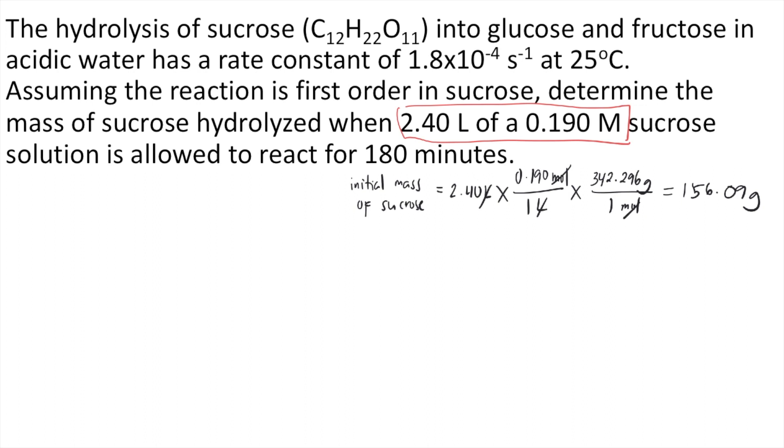So let's set that aside first and go to the main equation to solve this problem. This is an integrated rate law problem. According to the question, the reaction is first order. For a first order reaction, we know that the integrated rate law is ln of the final amount equal to ln of the initial amount minus the rate constant times time. We don't know the final amount yet, so just put ln of A equal to ln of 156.09 minus the rate constant given in the problem, which is 1.8 times 10 to the negative 4, and the time given is 180 minutes.